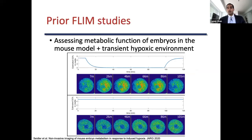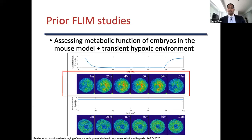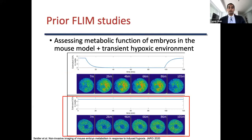In a study led by my colleague Dr. Emily Seidler, she assessed the metabolic function of mouse embryos exposed to transient hypoxia. She flushed 0% oxygen into the FLIM chamber for 90 minutes, then restored 5% oxygen gas for 30 minutes. Metabolic changes were observed in the NADH intensity and fraction engaged parameters. In the control group, when oxygen was maintained at 5%, the metabolic state of the embryo stayed relatively consistent.